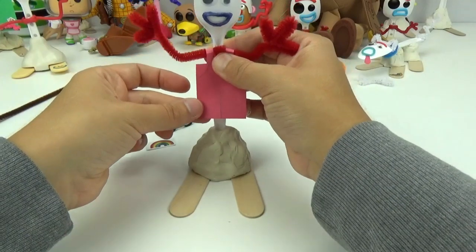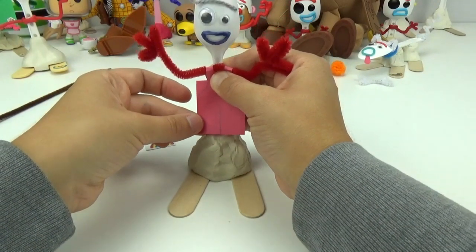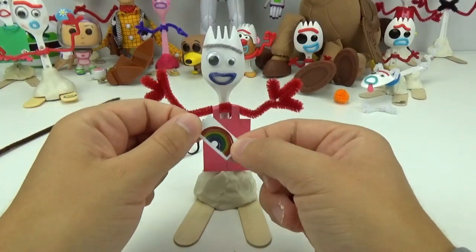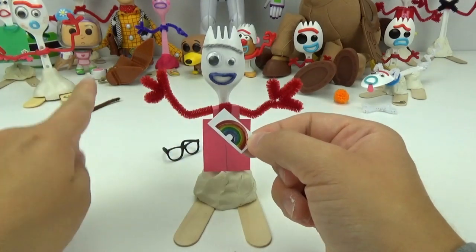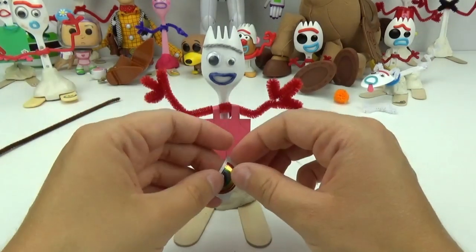Now, it's time to place Grandpa Forky right in the center. I will take our rainbow sticker just like Forky and place it on his foot upside down.